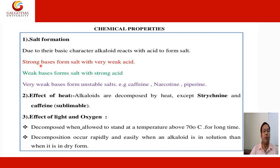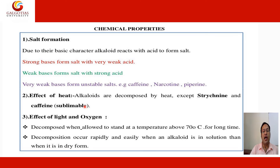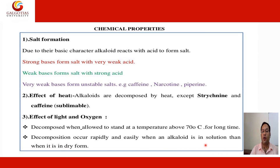Chemical properties: Due to their basic character, alkaloids react with acids to form salts. Strong bases form salts with very weak acids. Weak bases form salts with strong acids. Very weak bases form unstable salts — examples include caffeine, narcotine, and piperine. Effect of heat: alkaloids are decomposed by heat, with exceptions being strychnine and caffeine. Effect of light and oxygen: alkaloids decompose when allowed to stand at temperatures above 70°C for a long time, and decomposition occurs more rapidly when an alkaloid is in solution compared to dry form.